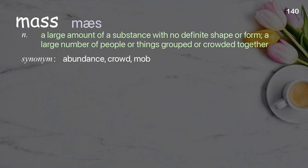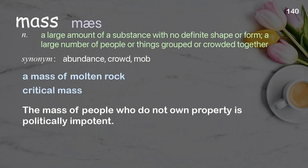Mass: a large amount of a substance with no definite shape or form; a large number of people or things grouped or crowded together. Examples: a mass of molten rock; critical mass. The mass of people who do not own property is politically impotent.